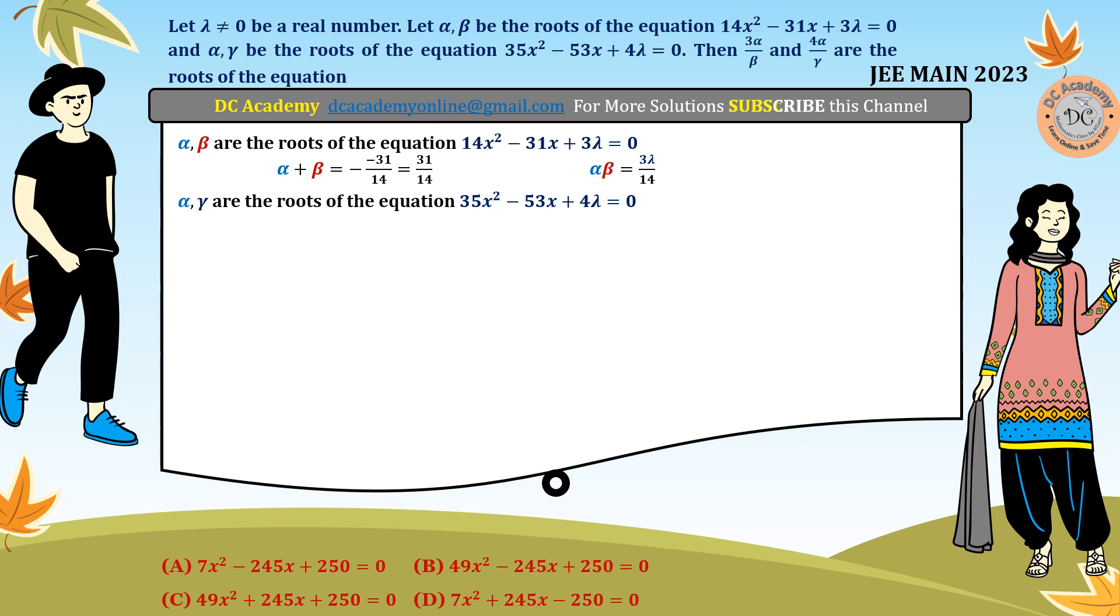α, γ are the roots of the equation 35x² - 53x + 4λ = 0. Therefore, α + γ = 53/35 and αγ = 4λ/35. Let's rename these as equations 1, 2, 3, 4 for convenience.